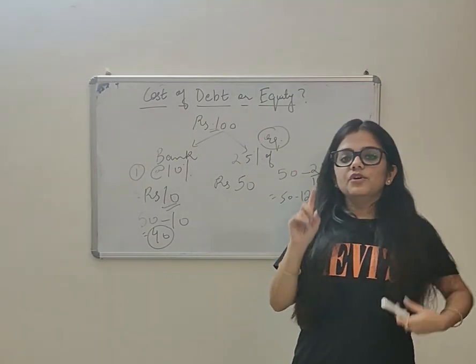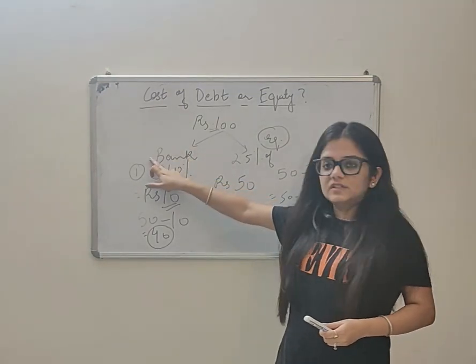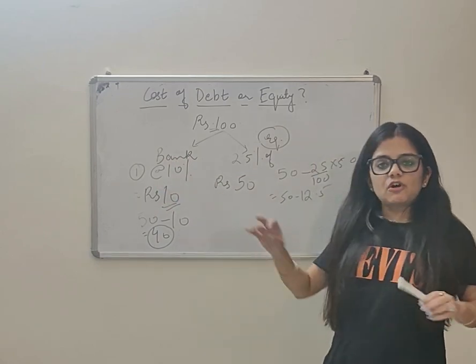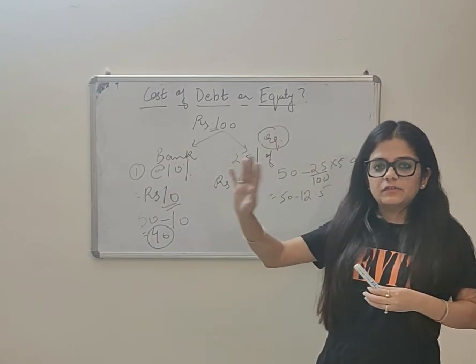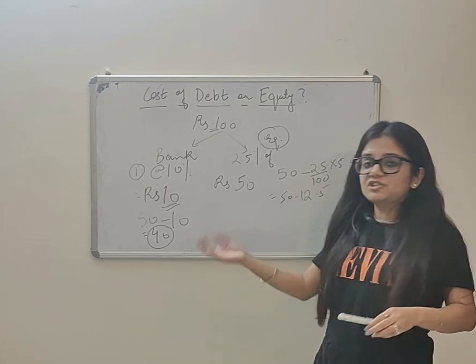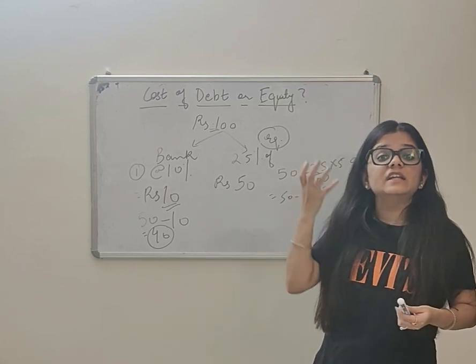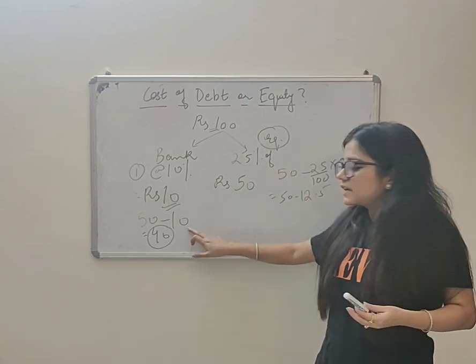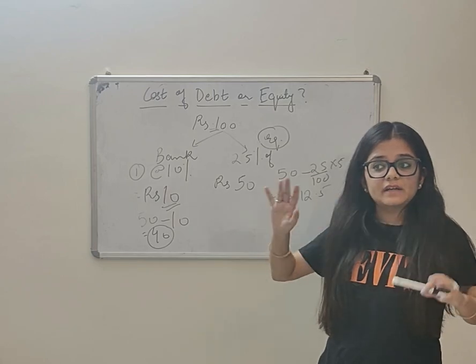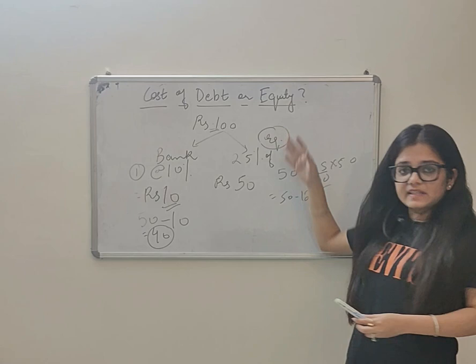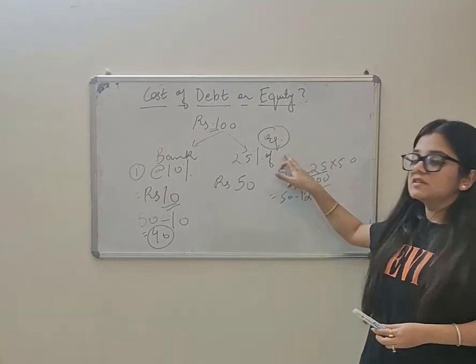First point - in case of bank loan, the company has to pay interest of 10 rupees at every interval. There is no expectation by the bank of any increment. This is fixed interest, there is no increment expectations from the bank side.